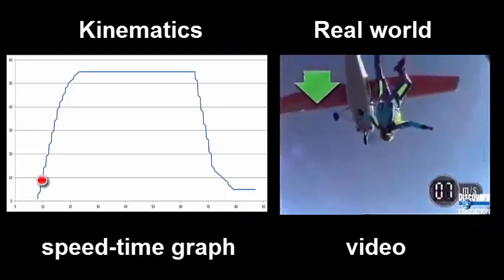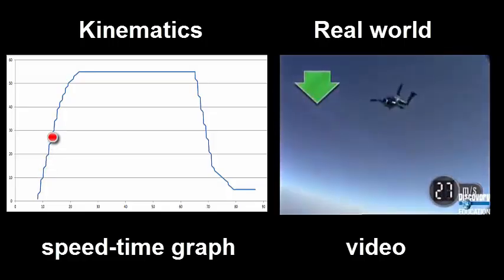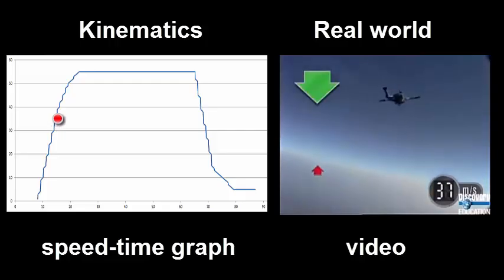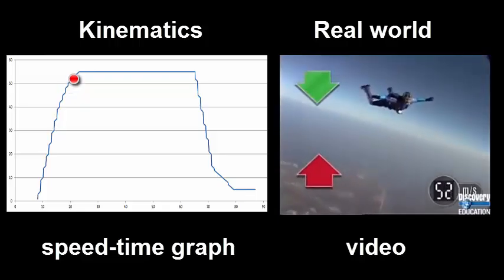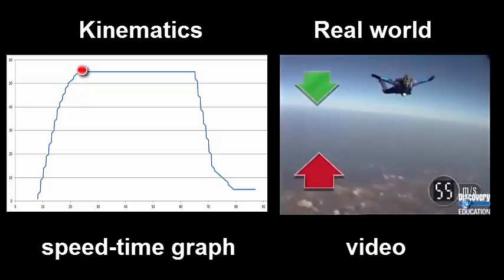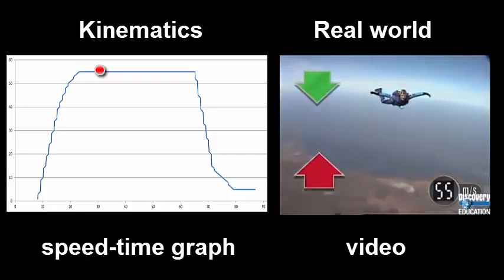Gravity immediately pulls her towards the ground and she starts to accelerate downwards, but air resistance is acting in the opposite direction. The faster she falls, the greater the air resistance. Eventually, the upward force of the air equals the downward force of gravity.